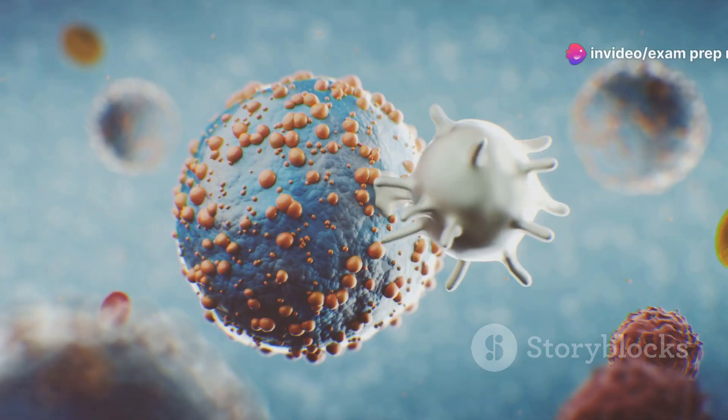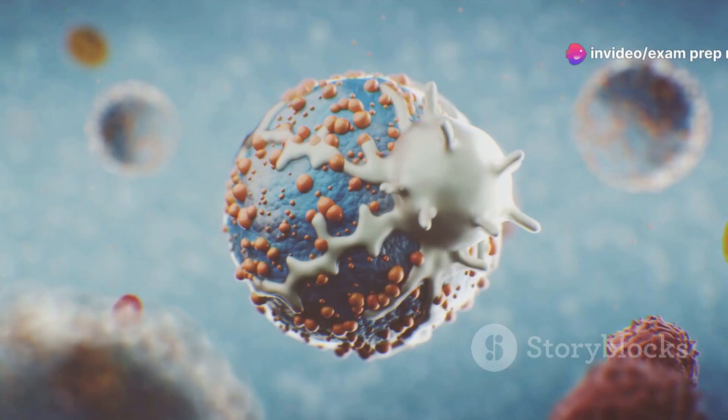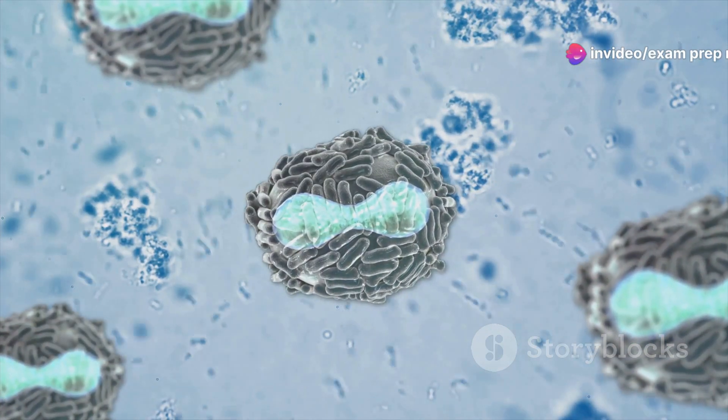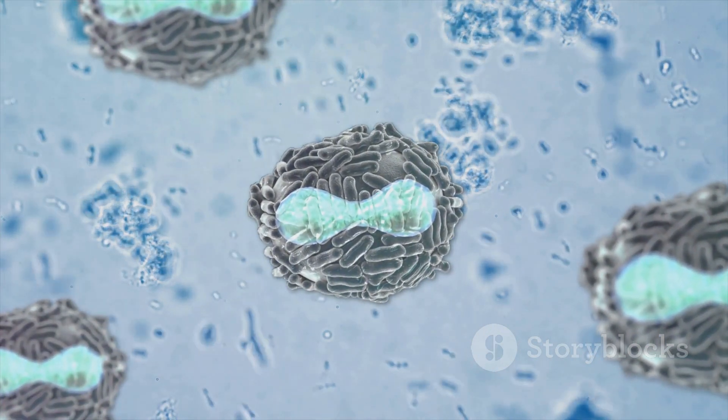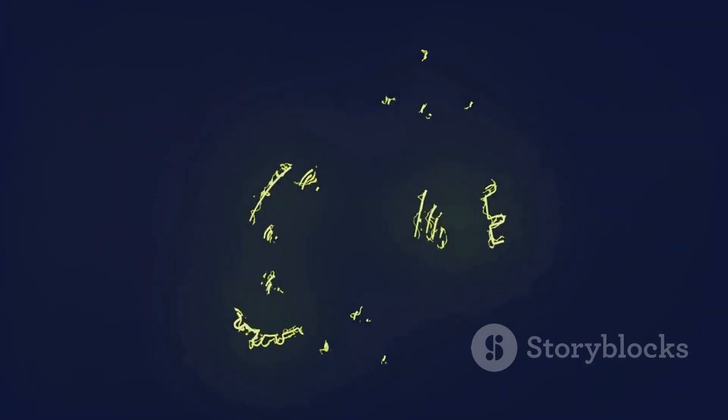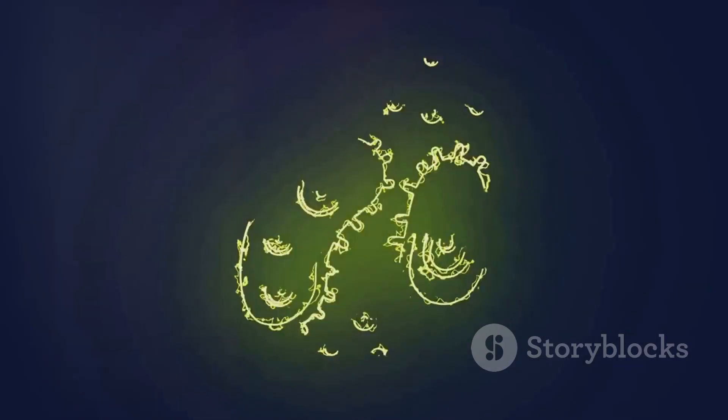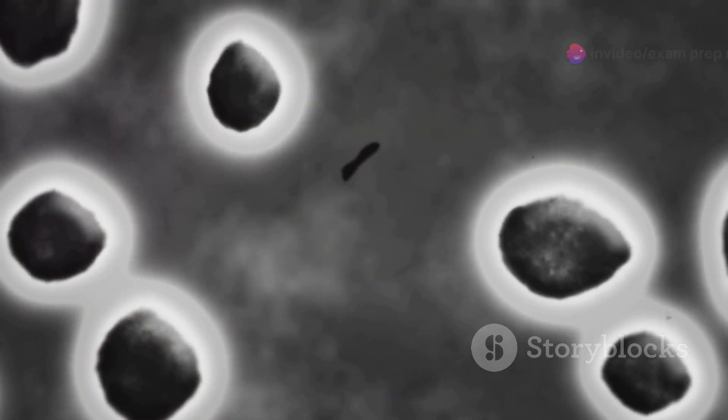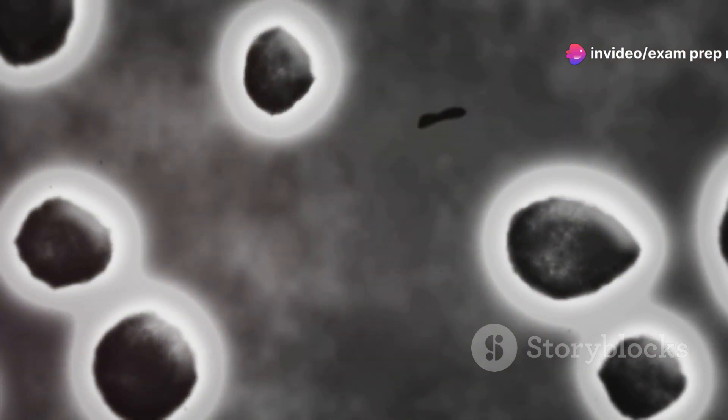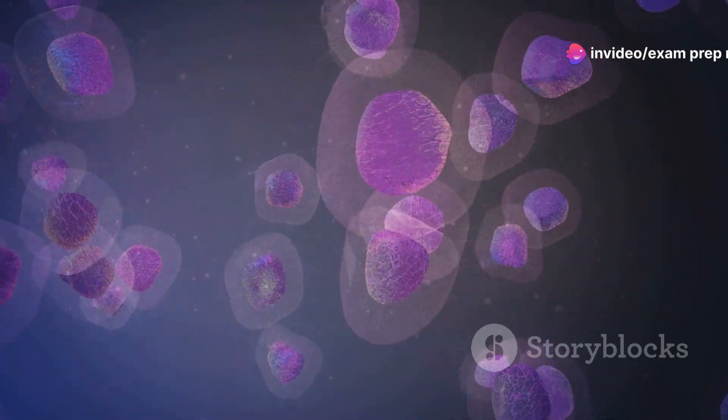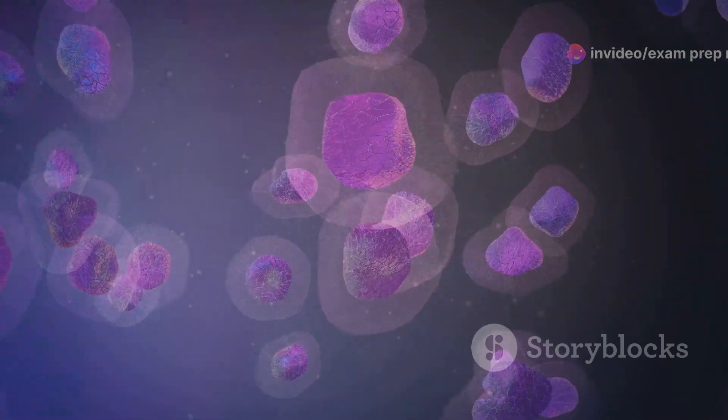Just like animals come in all shapes and sizes, so do bacteria. Their diverse forms are not just for show, they often reflect their unique lifestyles and functions. Let's meet some of the most common bacterial shapes. First up, we have the spherical cocci, pronounced cox-eye. These little guys resemble tiny balls and can be found individually or in groups.